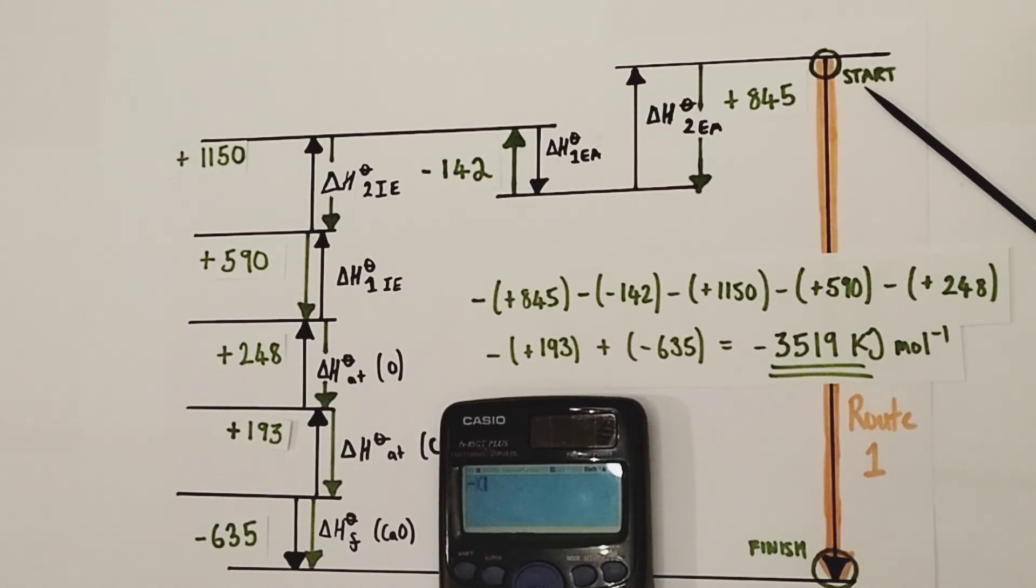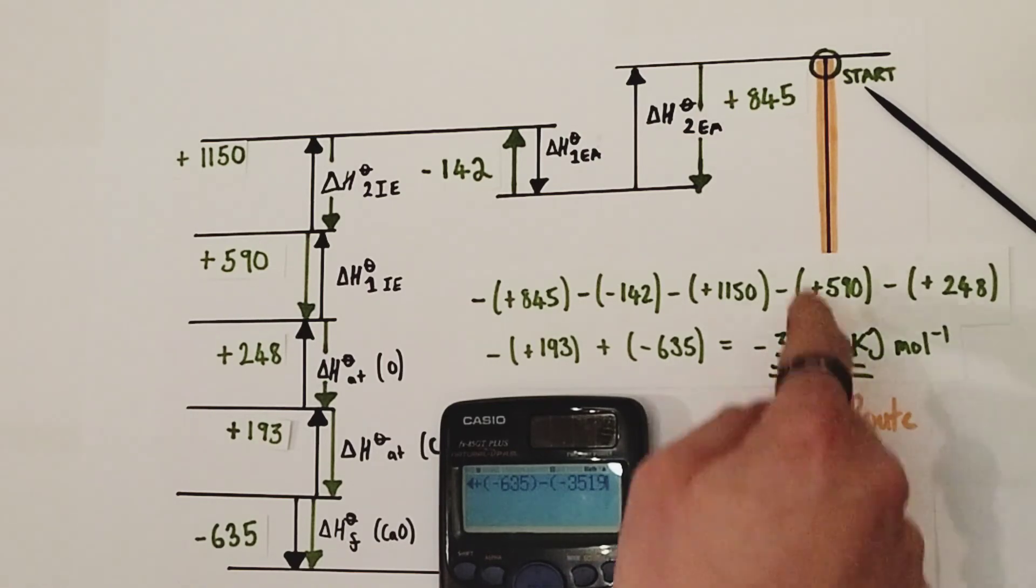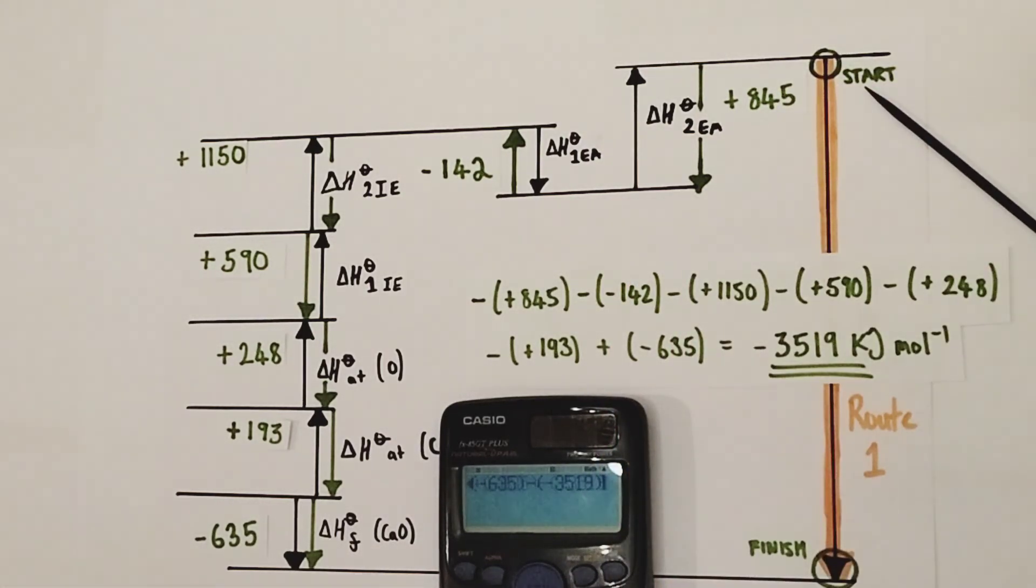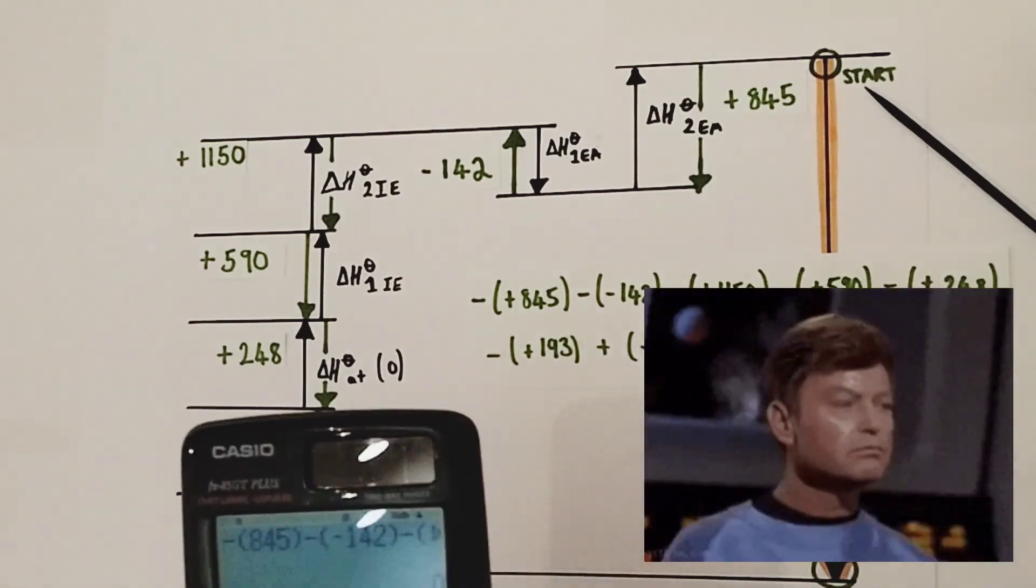Minus 845, minus minus 142, minus 1150, minus 590, minus minus 248, minus 193, plus minus 635, minus our new number which is minus 3519. Drum roll please. And moment of truth equals zero.